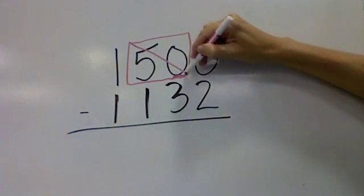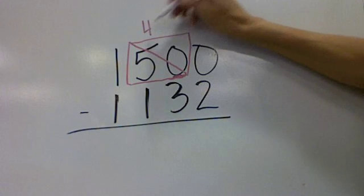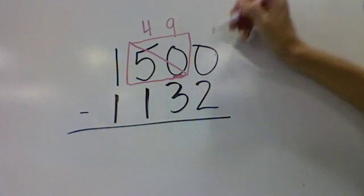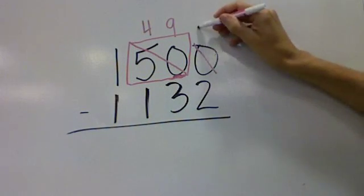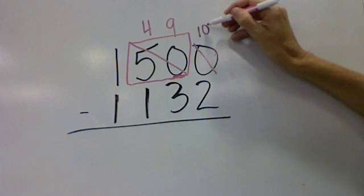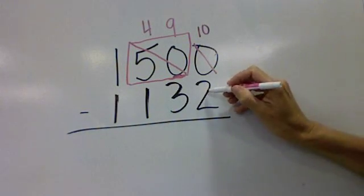Fifty tens minus one ten is forty-nine tens. And then our zero, we have a ten to give to. Ten minus two is eight.